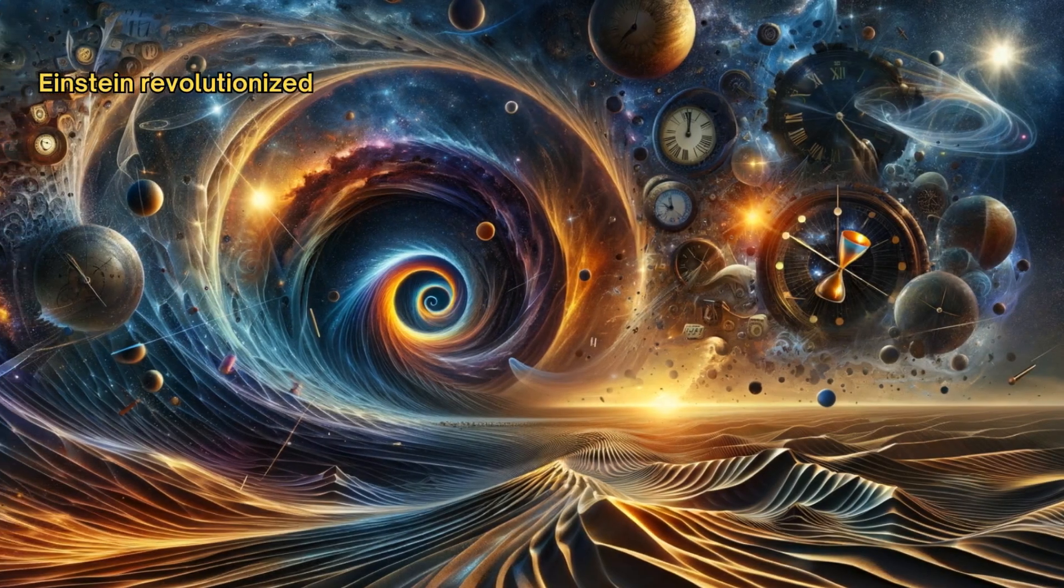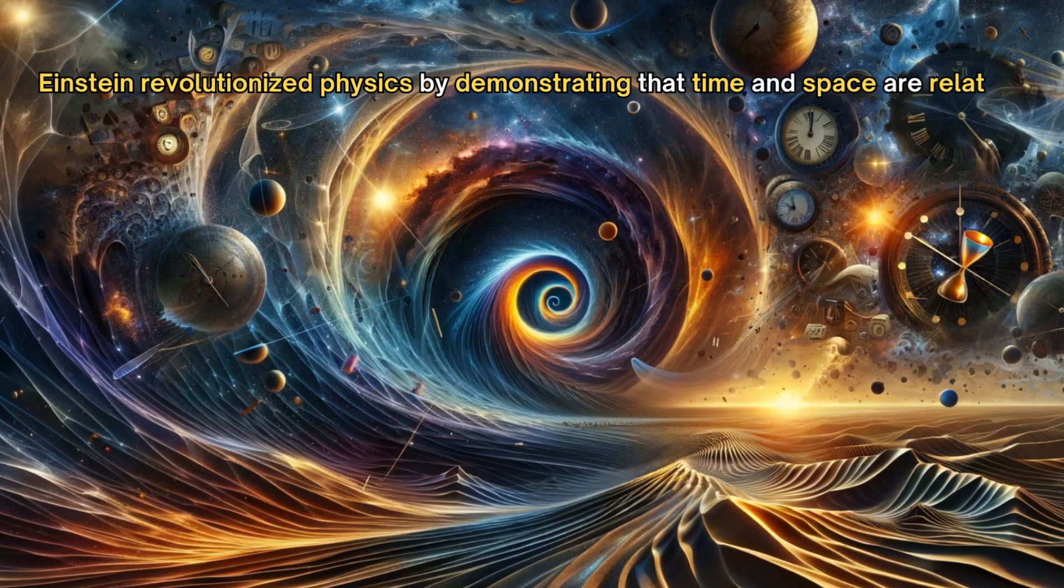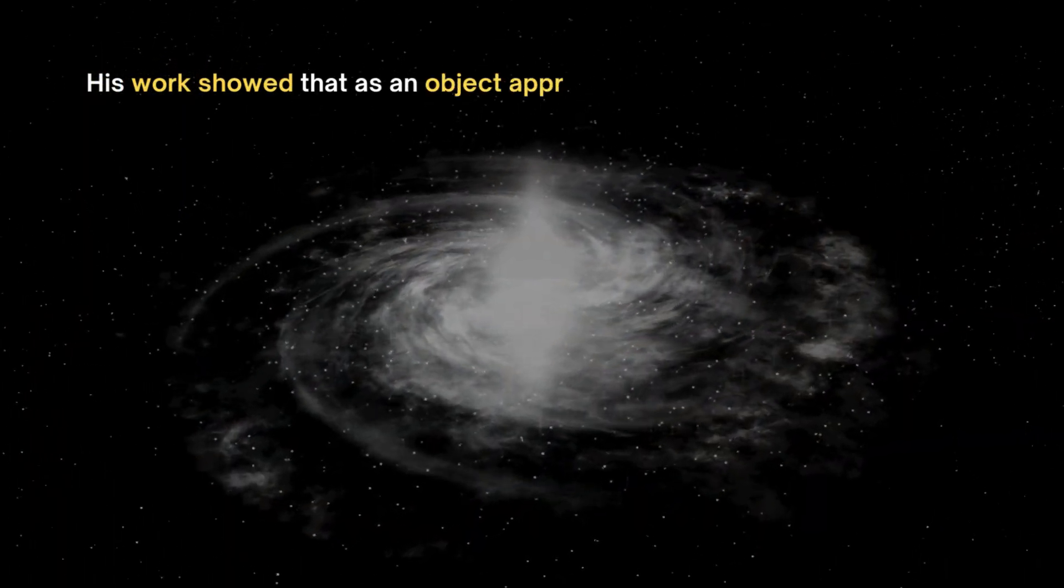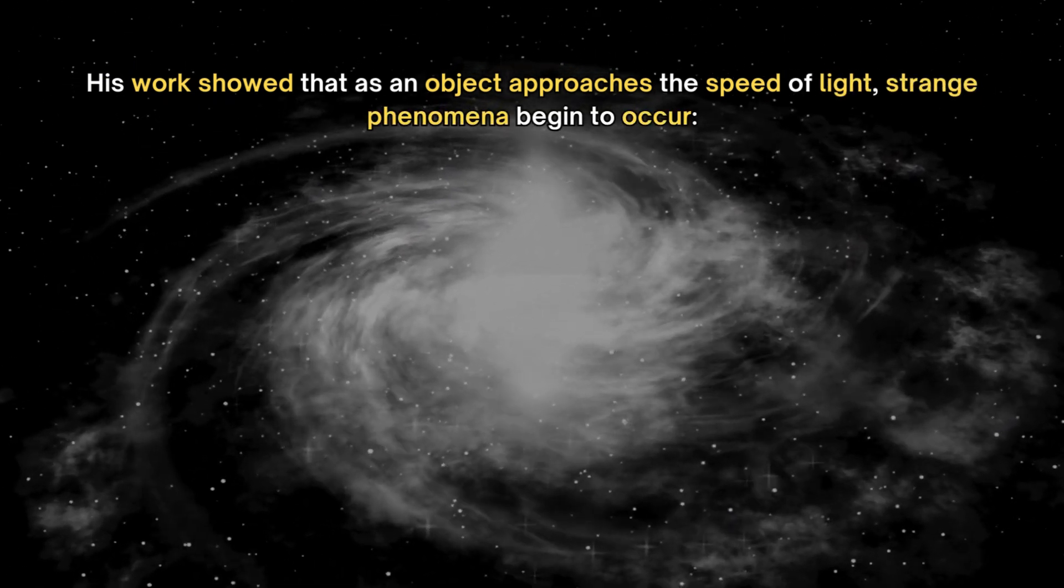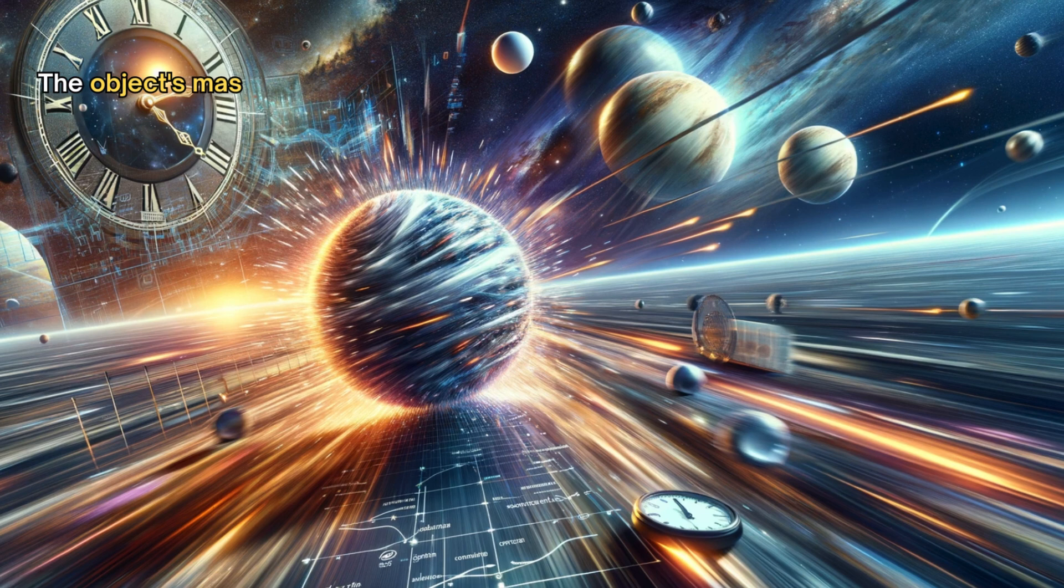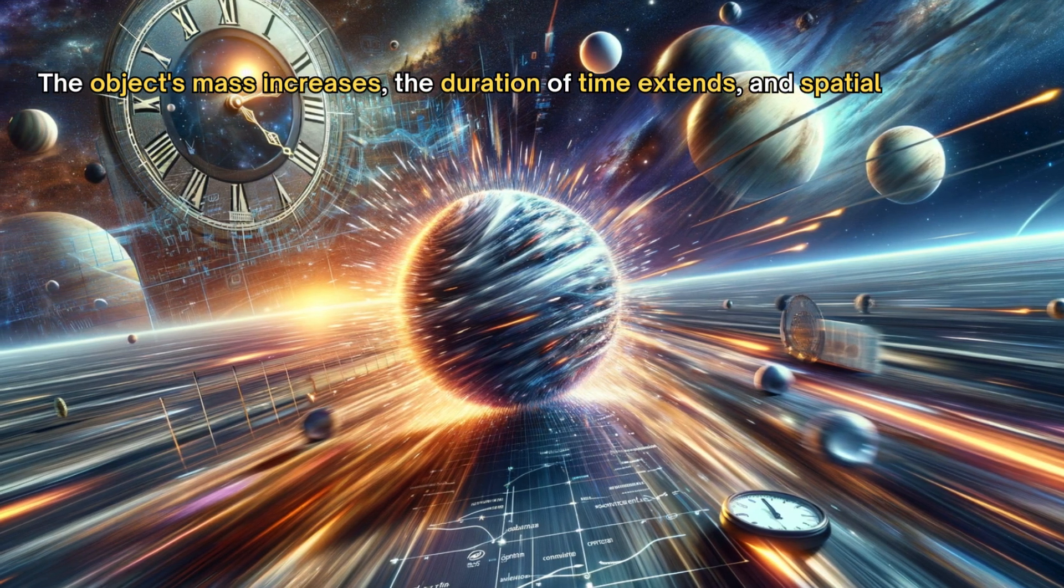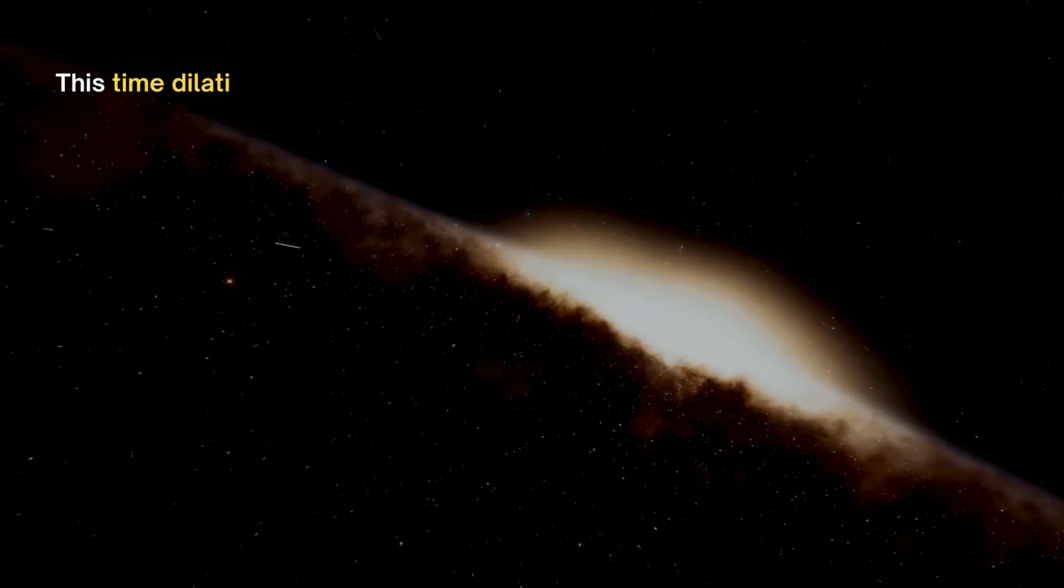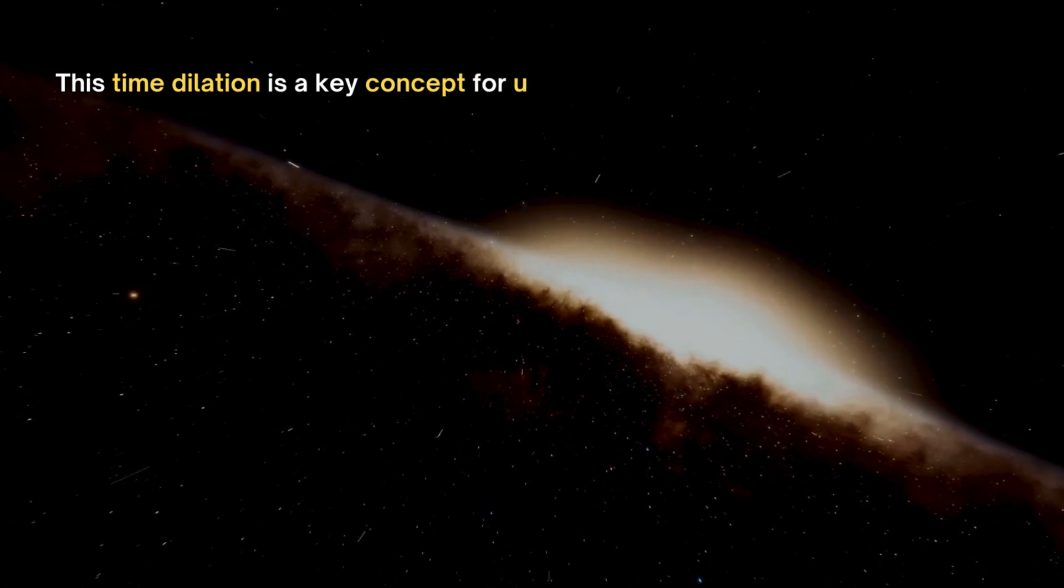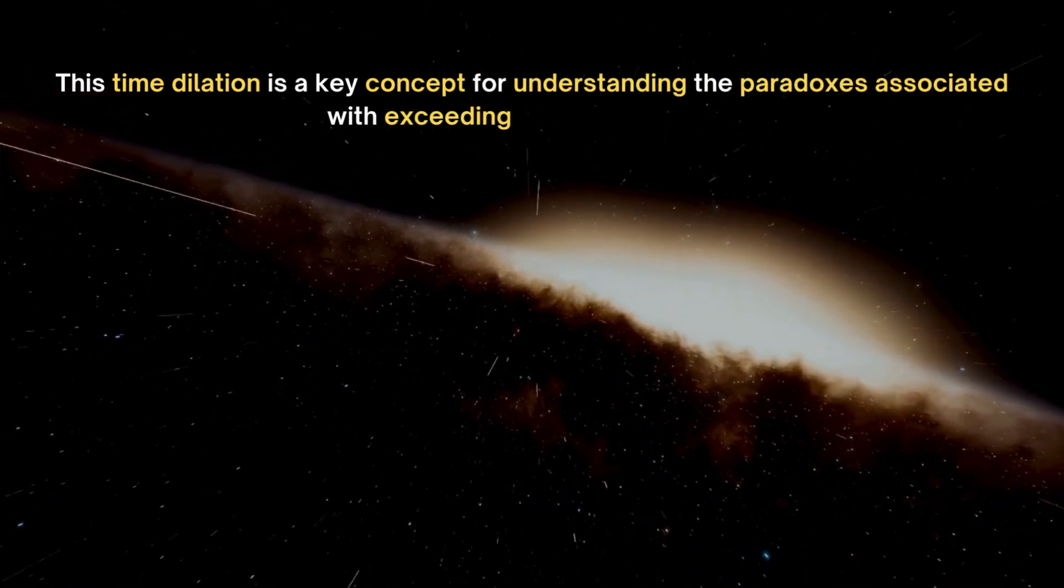Relativity and its effects. Einstein revolutionized physics by demonstrating that time and space are relative. His work showed that as an object approaches the speed of light, strange phenomena begin to occur. The object's mass increases, the duration of time extends, and spatial dimensions contract in the direction of movement. This time dilation is a key concept for understanding the paradoxes associated with exceeding the speed of light.